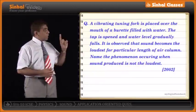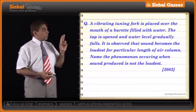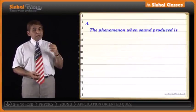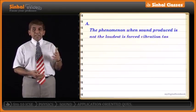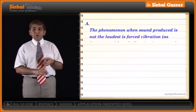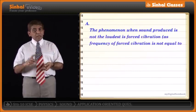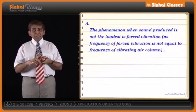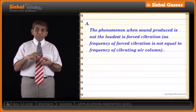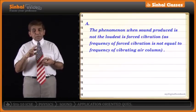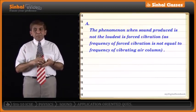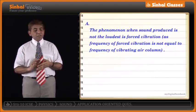Next question: name the phenomenon occurring when the sound produced is not the loudest. When the sound is not the loudest, it is simply forced vibration. Resonance is a special case of forced vibration wherein we have maximum amplitude and the loudest sound. When maximum amplitude and loudest sound are absent, the phenomenon is forced vibration.